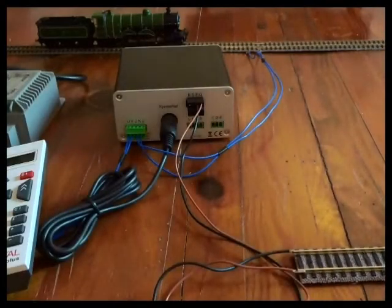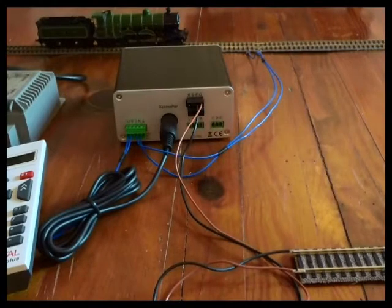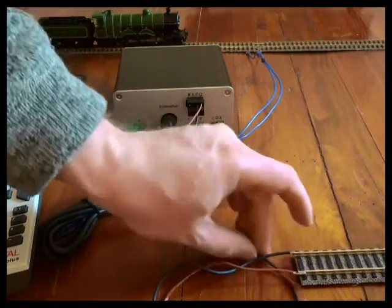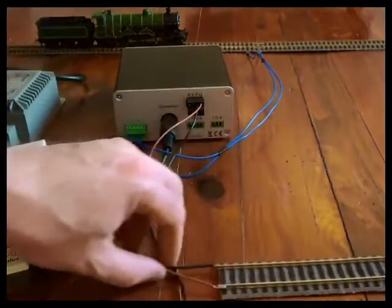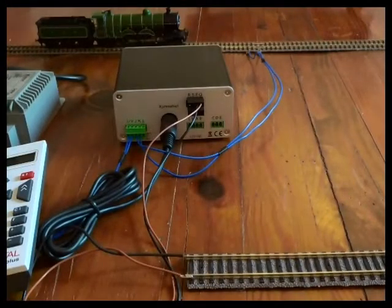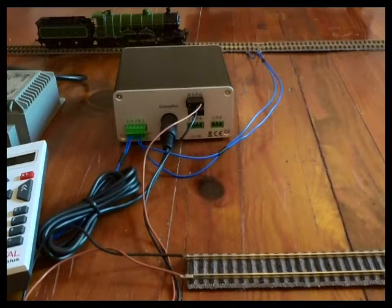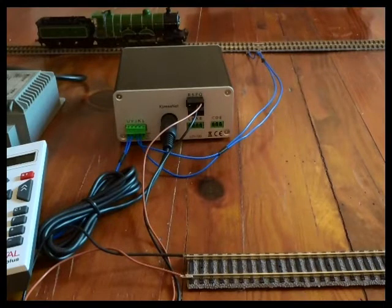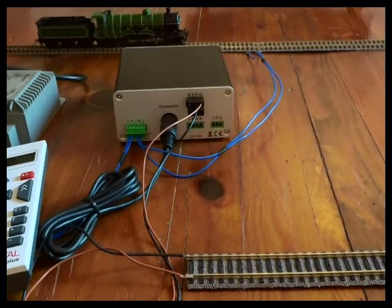The purpose of a programming track is to set up decoders. The first thing you'd want to do is change the address on a locomotive. On the Lenz system, the programming track is not powered except for when it's sending instructions to the decoder. It's quite a useful safety feature, particularly if you've soldered a decoder in.